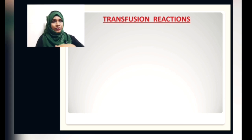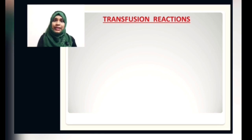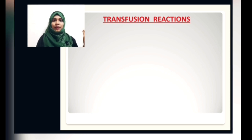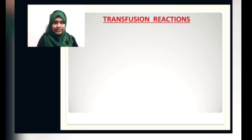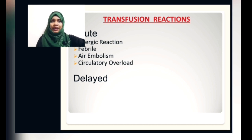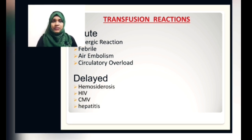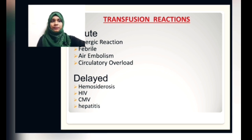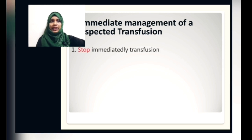Transfusion reactions, though not common, are classified into acute and delayed reactions. They occur due to antibody production in the recipient's body against the donor's blood group, causing agglutination with antigen and antibody, which leads to hemolysis or RBC lysis. The lysed hemoglobin can block renal tubules, causing renal damage. Acute reactions include allergic reaction, febrile illness, air embolism, circulatory overload, urticaria, fever, and chills. Delayed reactions include hemosiderosis, HIV, cytomegalovirus infections, and hepatitis.